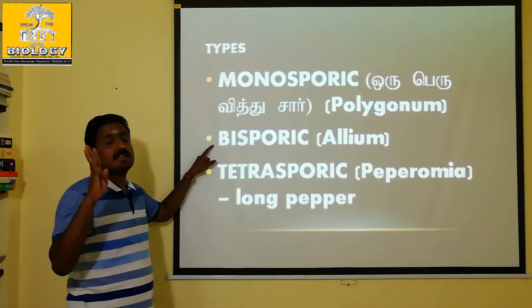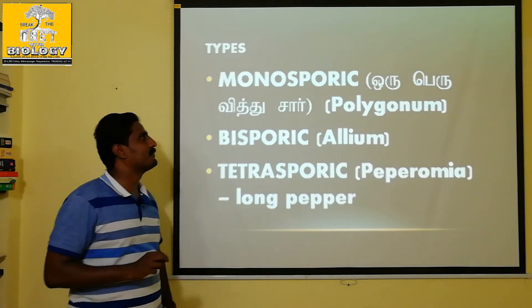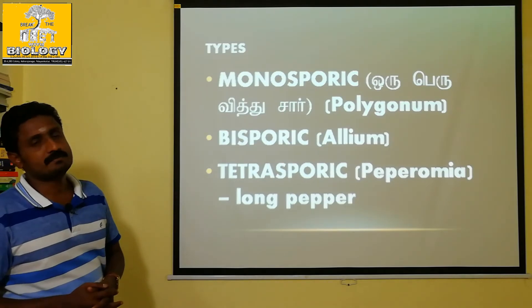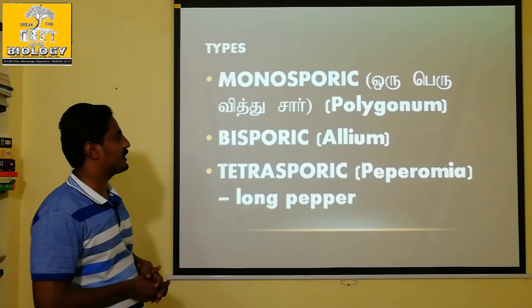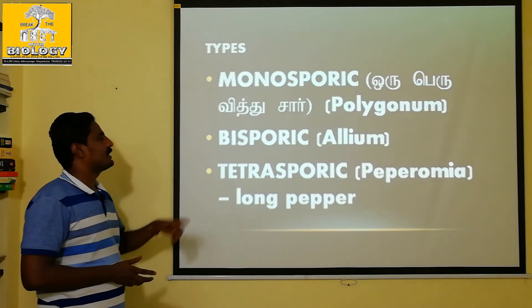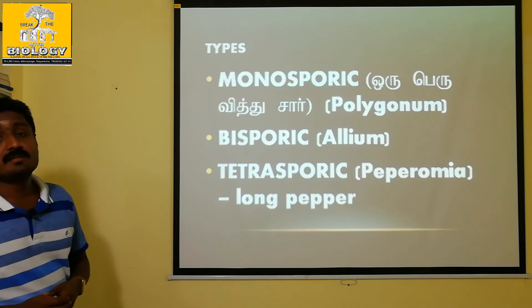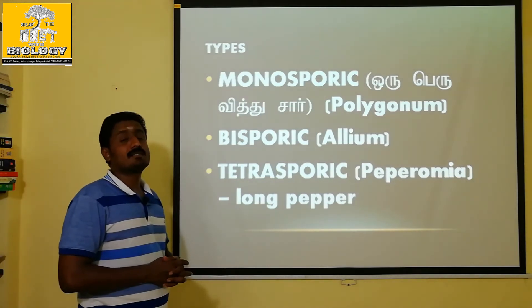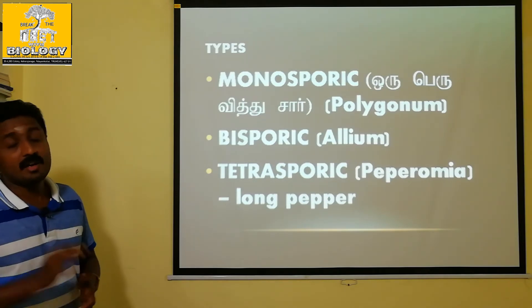When 2 Megaspores develop into the embryo sac, it is called Bisporic. The example is Allium cepa. When all 4 Megaspores develop into the embryo sac, it is called Tetrasporic. The example is Peperomia.